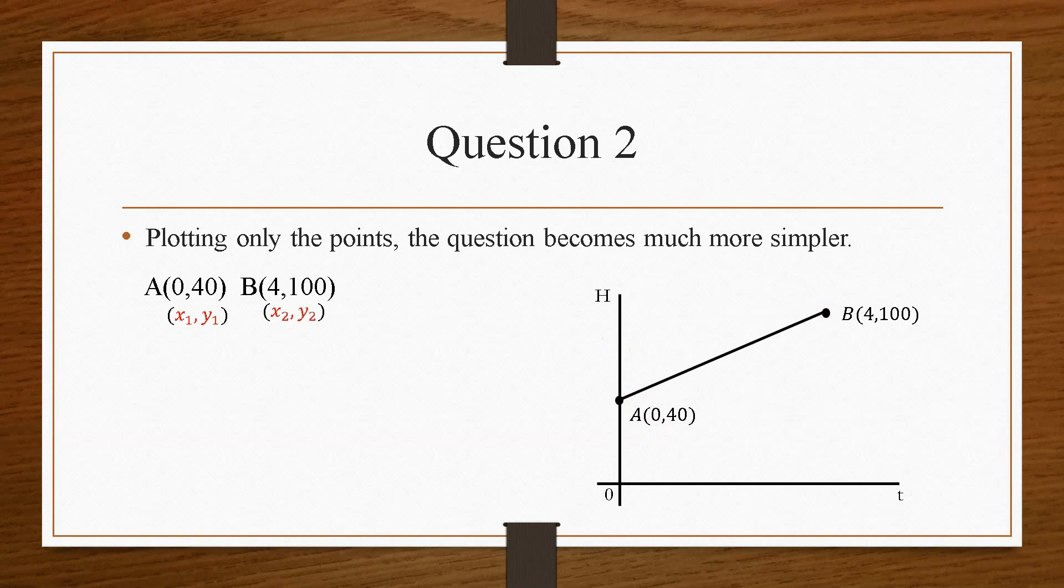So again, the same thing. Label the points. Keep it nice and neat. I've went for A as 1 and B as the 2s. Again, you could do it either or. It doesn't matter. So then it's a straight substitution. 100 minus 40 is 60 over 4, which will give you 15.